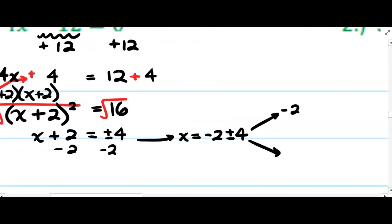We would have negative 2 + 4, negative 2 - 4, and we have our solutions.